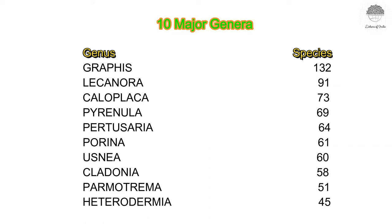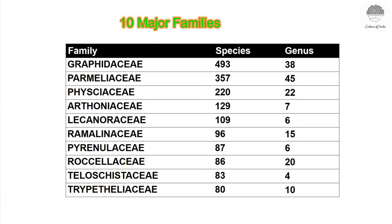These are the 10 dominant genera and families of lichens in India. Graphis with 132 species makes the most dominant genus in India, followed by Lecanora with 91 species, Caloplaca with 73 species, Pyrenula with 69 species, and Pertusaria with 64 species. For families, Graphidaceae with 493 species under 38 genera is the dominant family, followed by Parmeliaceae with 357 species and 45 genera, and Physciaceae with 220 species under 22 genera.